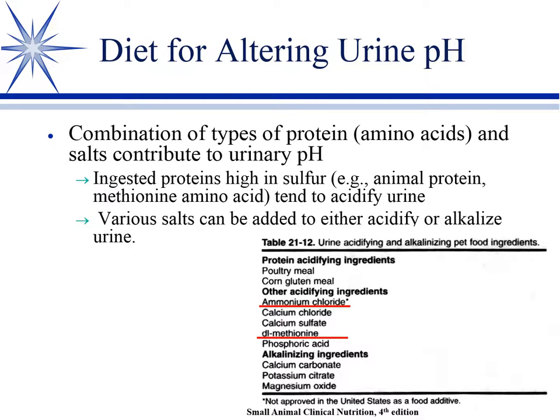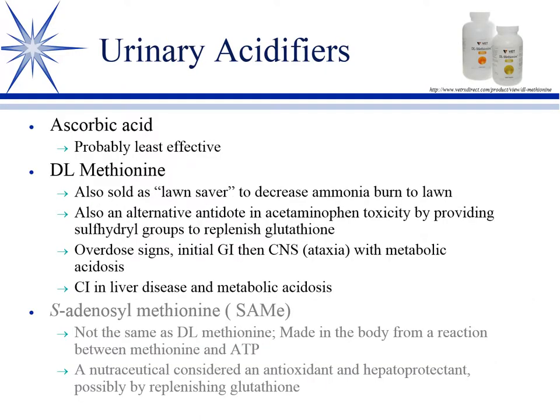Regarding dietary acidifiers: proteins high in sulfur and methionine as an amino acid tend to acidify the urine. Various salts are also added, though you don't need to memorize these since you'll typically buy premade diets. Ascorbic acid — vitamin C — has been proposed as a urinary acidifier but doesn't work very well, so we rely instead on methionine and ammonium chloride.